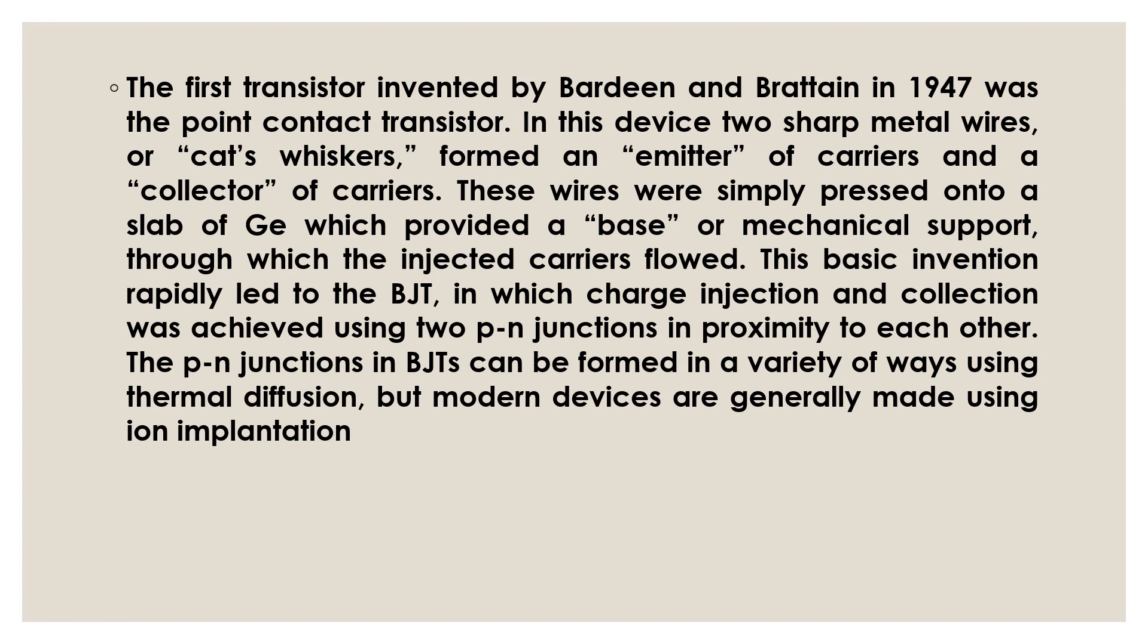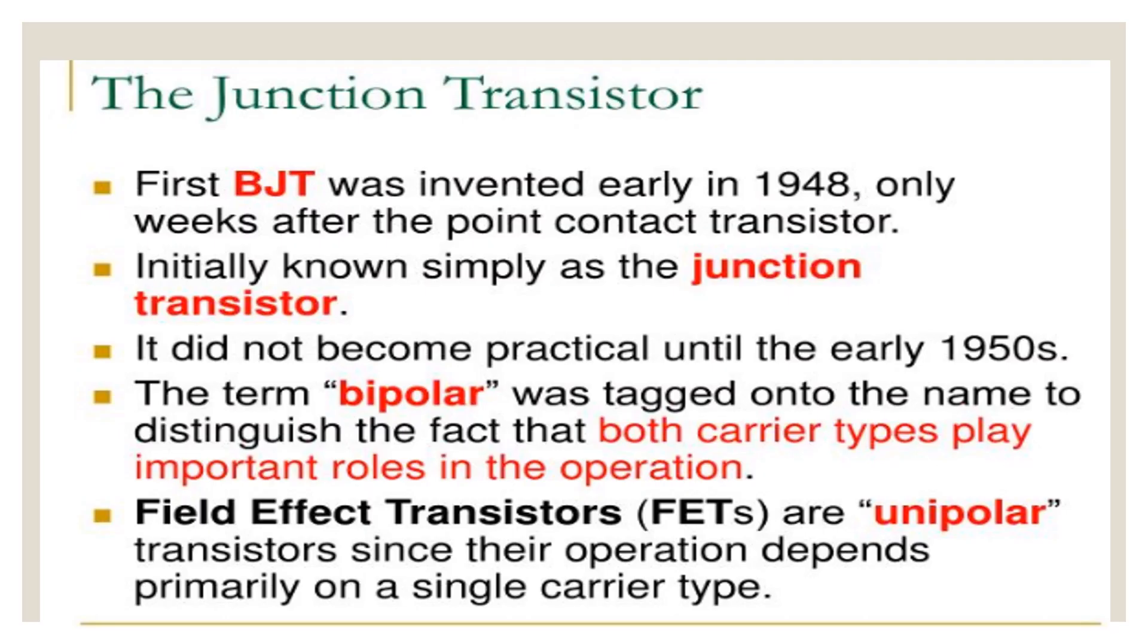But in modern devices ion implantation method is used initially known as the junction transistor. It does not become practical until the early 1950s. The term bipolar was tagged onto the name to distinguish the fact that both carrier types play important roles in the operation. Field effect transistors are unipolar transistors since their operation depends primarily on single carrier type. And we have discussed field effect transistors in detail in chapter number 6.